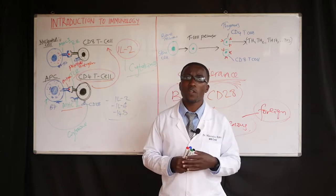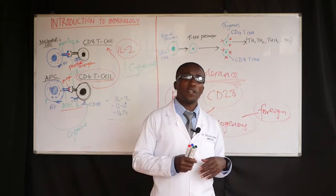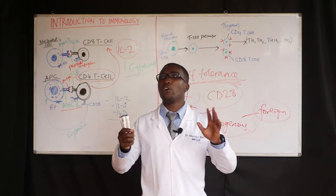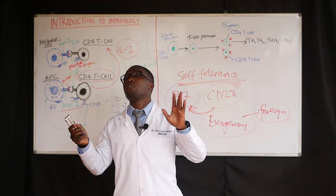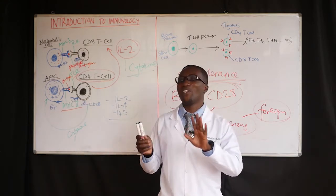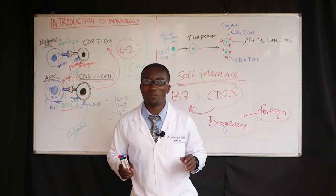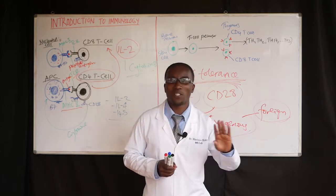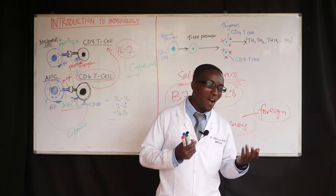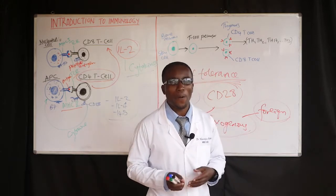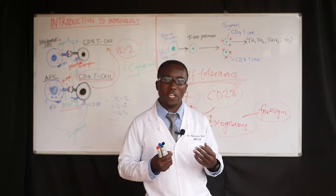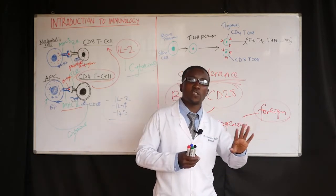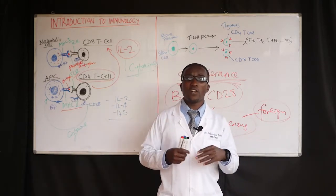Activated dendritic cells, like their name sounds, have octopus-like arms — we all know the octopus. They have large surface areas made up of dendrites — not the dendrites of the nervous system or neurons, but their own tendrils or dendrite-like projections. When activated, they produce cytokines.